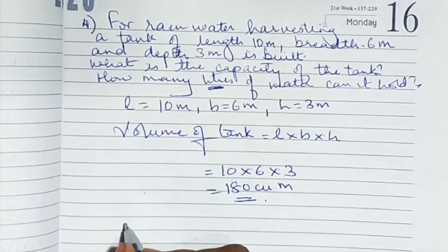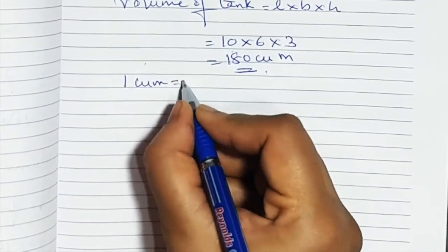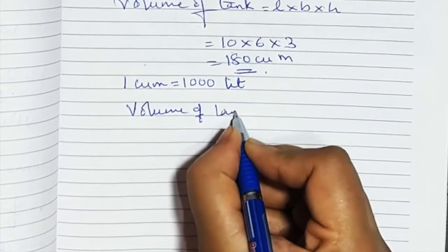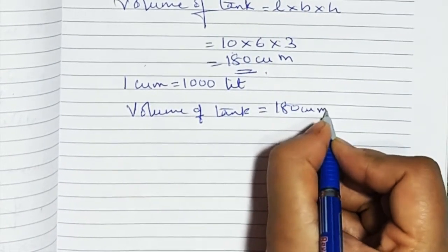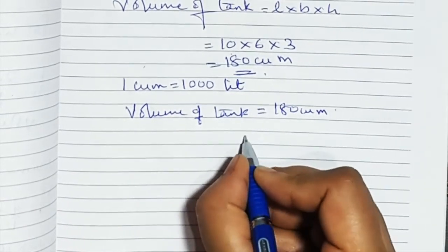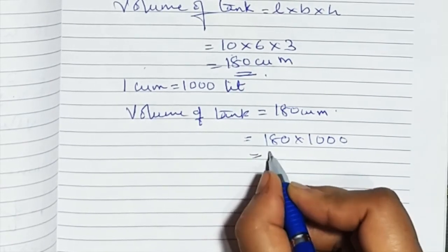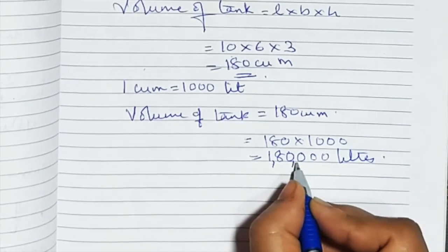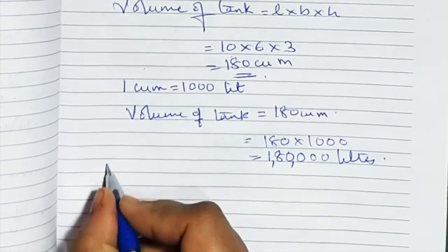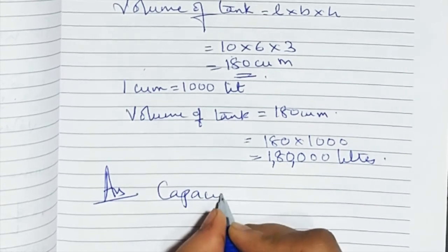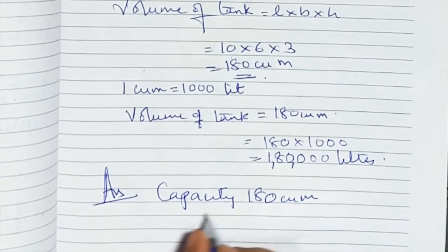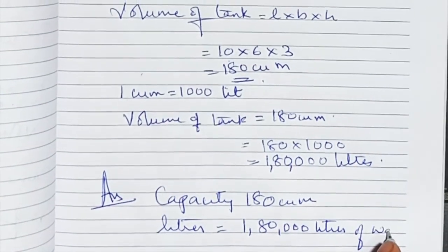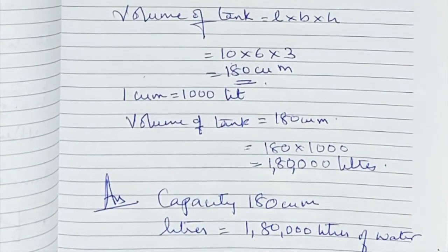One cubic meter is equal to 1000 liters. The volume of the tank is 180 cubic meters, so to find the capacity in liters we multiply 180 × 1000 = 180,000 liters. The capacity is 180 cubic meters and it can hold 180,000 liters of water. That's the end of Exercise 16.1.